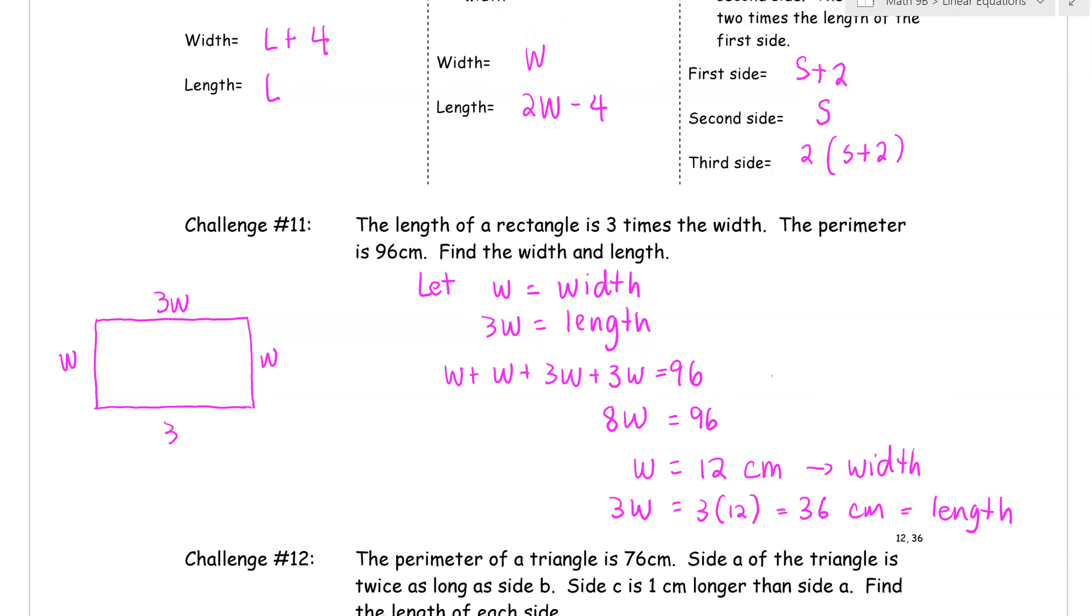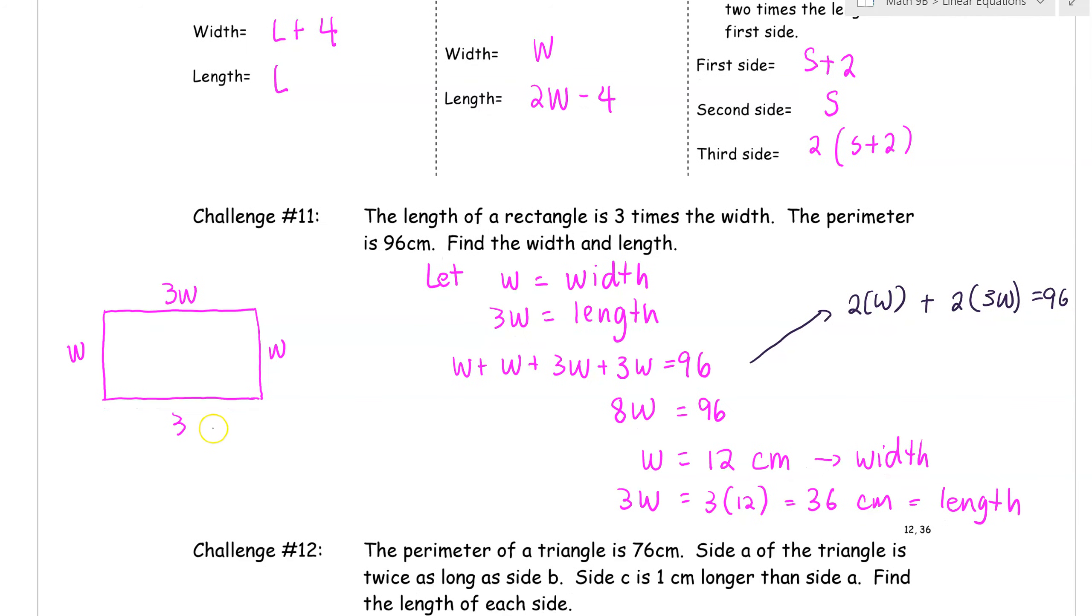Another alternative expression that you can make here, since there's two Ws, is 2 times the width plus 2 times the length is equal to 96. This would be a shorter equation, but it still leads to the same answer. And moving towards your equation there, your W is 12, and your 3W is 36. And we can make a generalized statement here. The width is 12 centimeters, and the length is 36 centimeters. Don't forget that final sentence there. So that's challenge number 11.